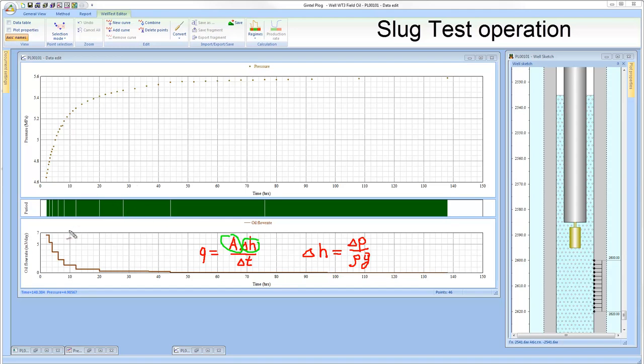We can observe now that as soon as the wellbore pressure increases, the fluid flow rate decreases and finally kills itself.